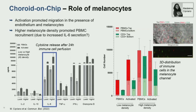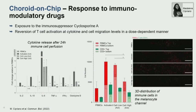So what did we do with this system? One of the first things was to study the response to immunomodulatory drugs. We used the immunosuppressor cyclosporine A at two different doses — 100 nanogram and 500 nanogram per ml — and we could see a reversion of T cell activation both at the cytokine and migration level in a dose-dependent manner. At a high dose, the cytokine secretion was almost reduced to the control level and T cell recruitment was strongly limited.